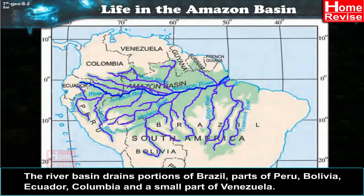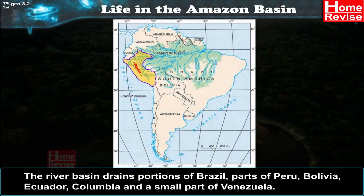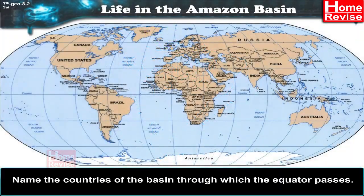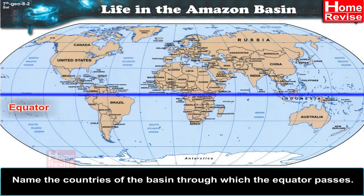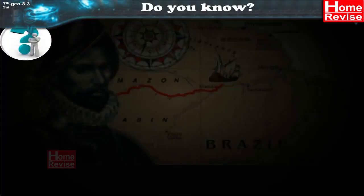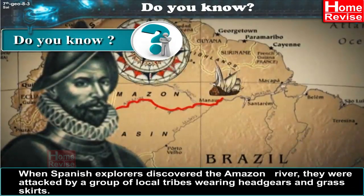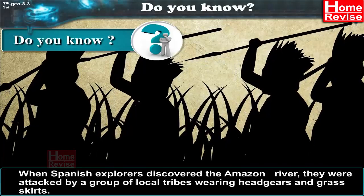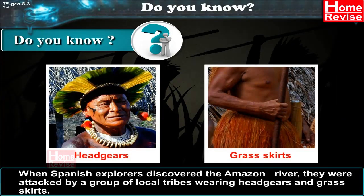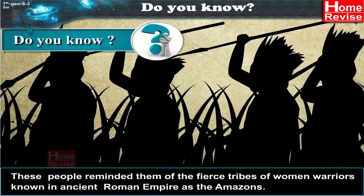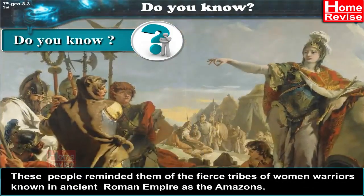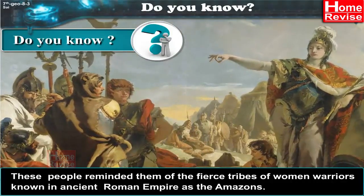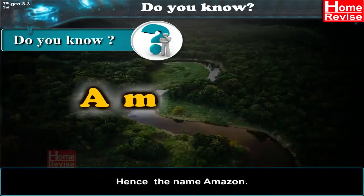Numerous tributaries join the Amazon River to form the Amazon Basin. The river basin drains portions of Brazil, parts of Peru, Bolivia, Ecuador, Colombia, and small parts of Venezuela. Name the countries of the basin through which the equator passes. When Spanish explorers discovered the Amazon River, they were attacked by a group of local tribes wearing headgears and grass skirts. These people reminded them of the fierce tribes of women warriors known in the ancient Roman Empire as the Amazons — hence the name Amazon.